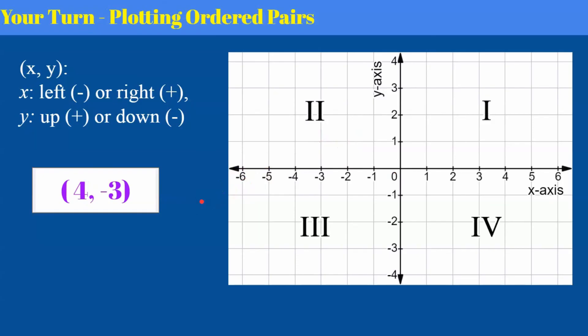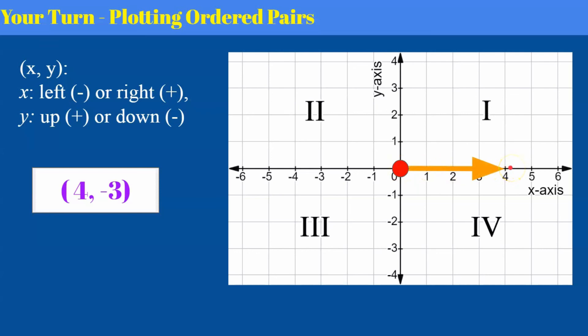Your turn. Plot the ordered pair (4, negative three). Pause, come back and hit play when you're ready to check your work. Welcome back. You should have started at the origin, gone right positive four, and down negative three — and that would be the location of this point.